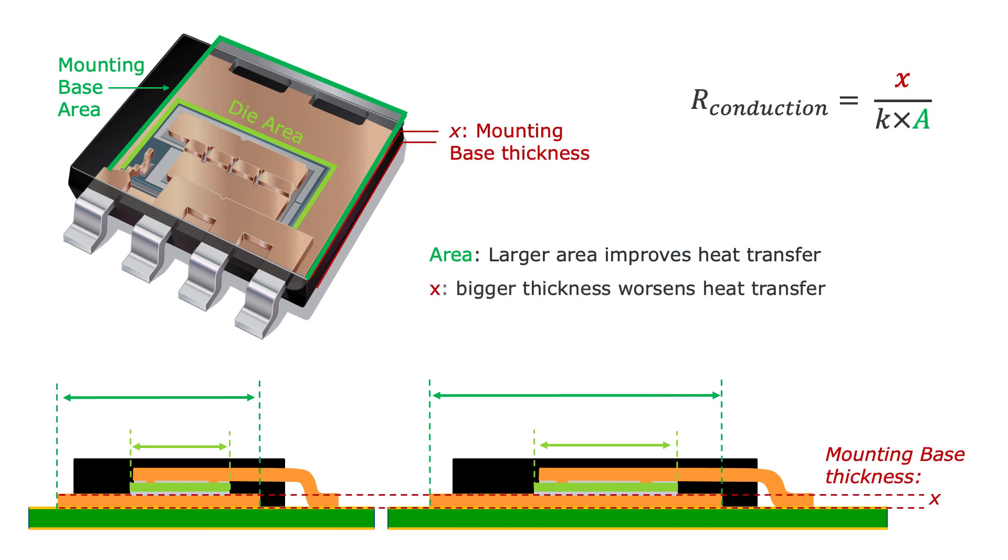The mounting base thickness is also a factor. The larger the thickness, the larger the RTA Junction to Ambient gets.